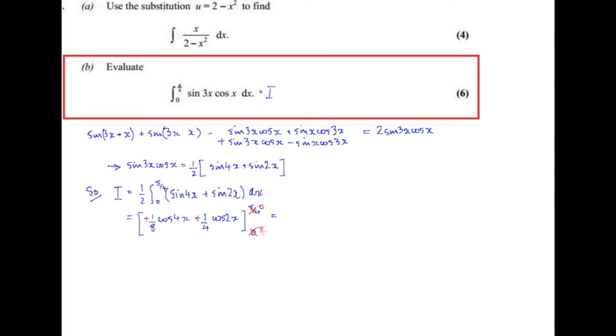So I'm going to integrate from π/4 to 0. So the first one I'm going to substitute in is my 0. So 0 goes into cos 4x, cos of 4 zeros is cos 0, is 1, times an eighth, that's an eighth. And cos of 2 zeros, cos 0 again, times a quarter. Cos 0 is 1, times a quarter is a quarter. So I've got an eighth and a quarter.